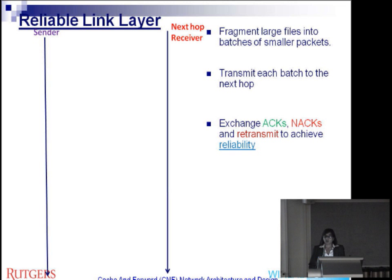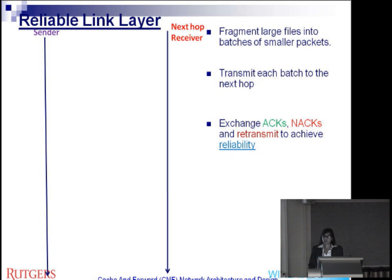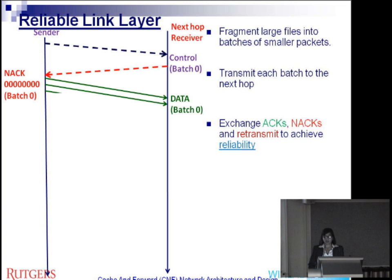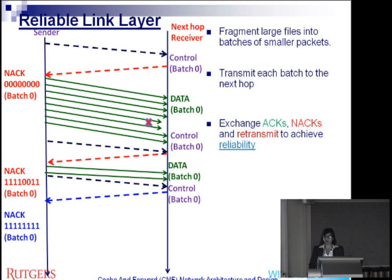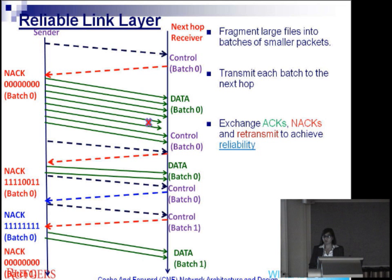To support the hub-by-hub transport protocol, we have a reliable link protocol that takes care of per-hub reliability. When the entire file is sent to the next hub, it should make sure that the next hub receives it completely. What we do is take the file, break it down into batches of smaller packets, and then each batch is transmitted in a reliable fashion. There are simple control and acknowledgement messages exchanged to make sure all packets within a batch are delivered. Batch 0 is delivered first, and then batch 1 gets delivered after batch 0 is completely delivered.